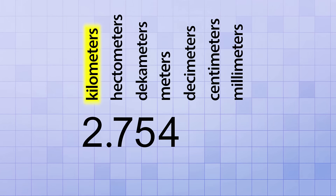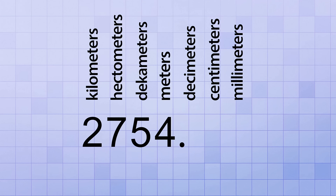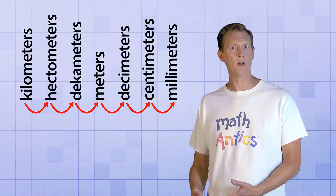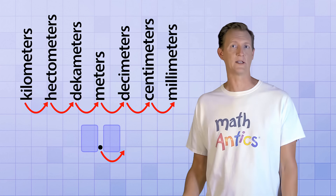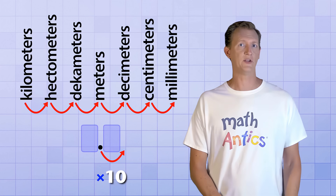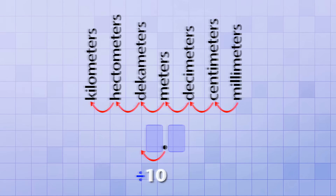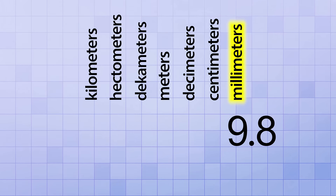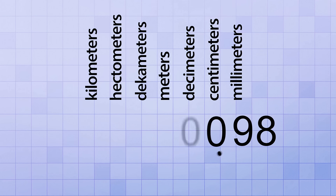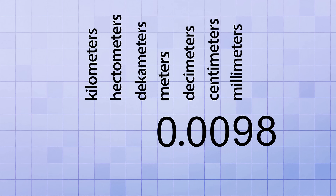2.754 kilometers is the same as 27.54 hectometers, which is the same as 275.4 decameters, which is the same as 2,754 meters, which is the same as 27,540 decimeters, and so on. You can convert to the next smaller metric unit by shifting the decimal point to the right, which is equivalent to multiplying by 10. And you can convert to the next bigger metric unit by shifting the decimal point to the left, which is equivalent to dividing by 10. For example, 9.8 millimeters is the same as 0.98 centimeters, which is the same as 0.098 decimeters, which is the same as 0.0098 meters, and so on.